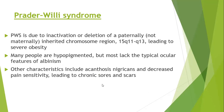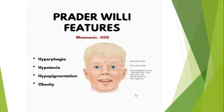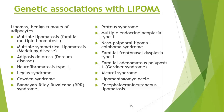Prader-Willi syndrome is due to inactivation or deletion of the paternally — not maternally — inherited chromosomal region 15q11-q13, leading to severe obesity. In addition to severe obesity, these individuals also have hypopigmented skin but lack the typical ocular features of albinism. Other characteristics include acanthosis nigricans, decreased pain sensitivity leading to chronic sores and scars. The four important features of Prader-Willi syndrome are hyperphagia, hypotonia, hypopigmentation, and obesity — and importantly, the hypopigmentation is not ocular.